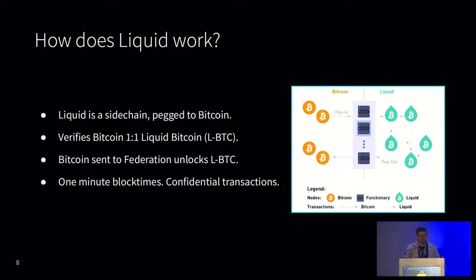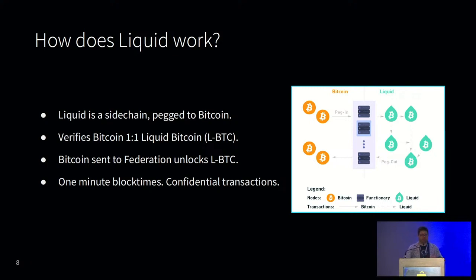Users can freely run their own copy of Elements to verify the network and to peg in and transact without permission. The liquid sidechain has faster block times of one minute and the ability to issue new assets like stablecoins — USD Tether, a Japanese stablecoin, LiquidCAD, and a Euro stablecoin, as well as tokenized securities like Blockstream's Bitcoin mining notes. Liquid also has enhanced privacy with confidential transactions where asset types and amounts are blinded and hidden to everyone except the sender and receiver. Fees are very low — the base fee rate is 10 times lower than on Bitcoin — and with higher fee rate environments we're seeing a significant uptick in usage on Liquid.